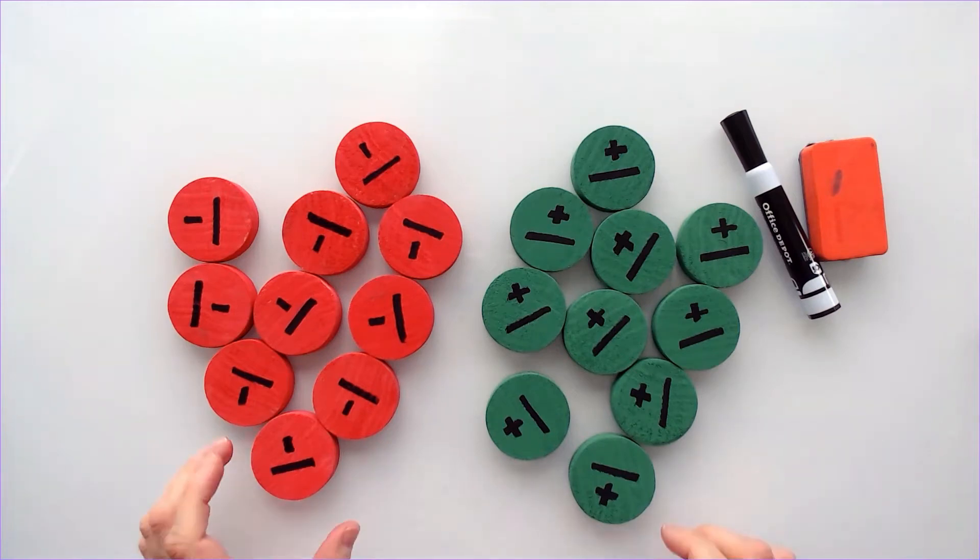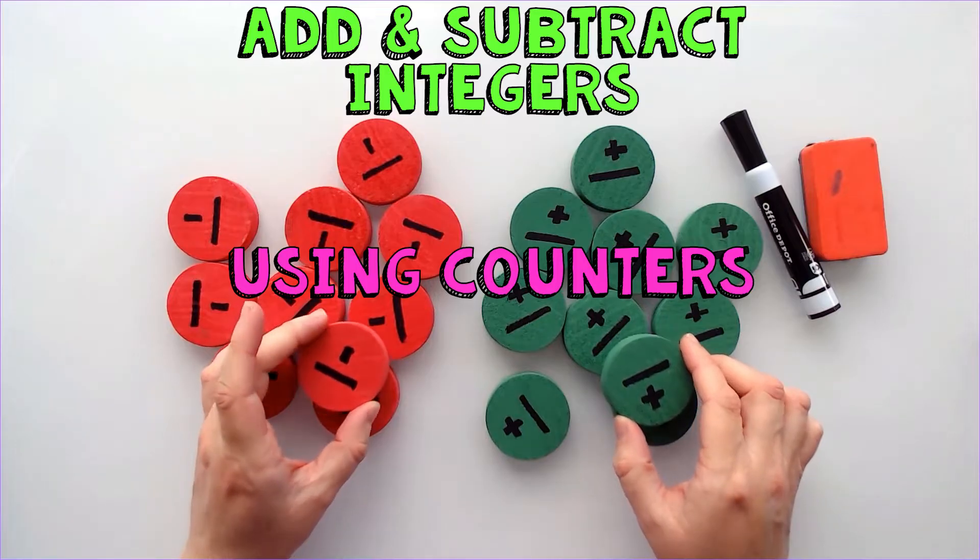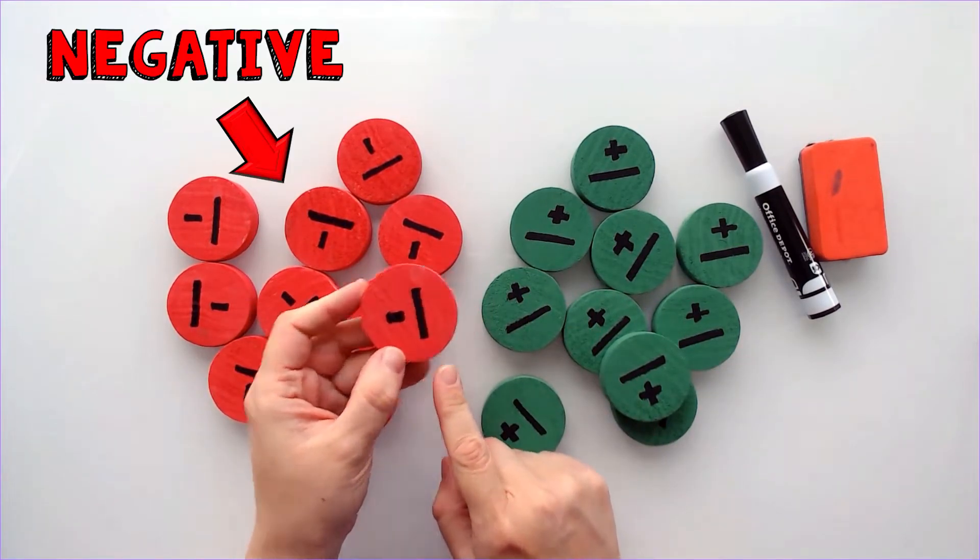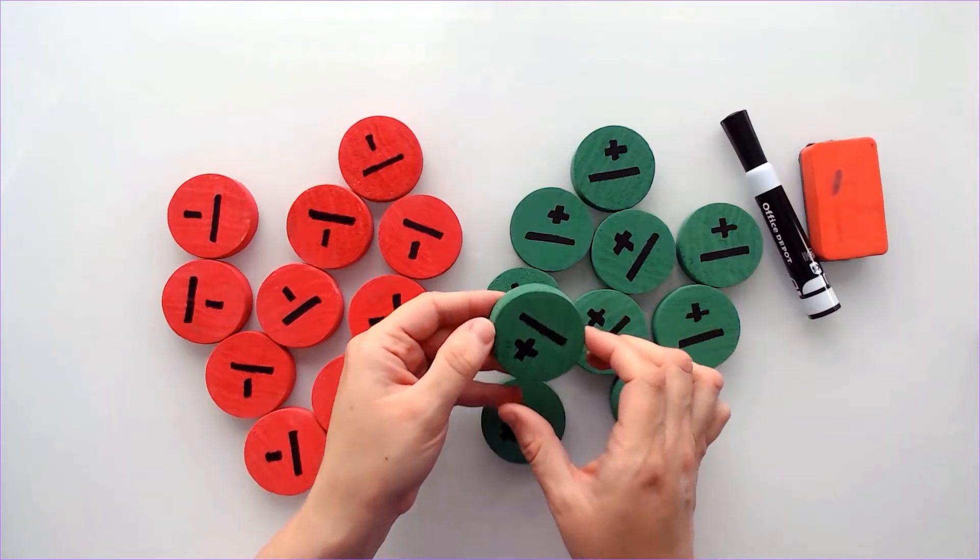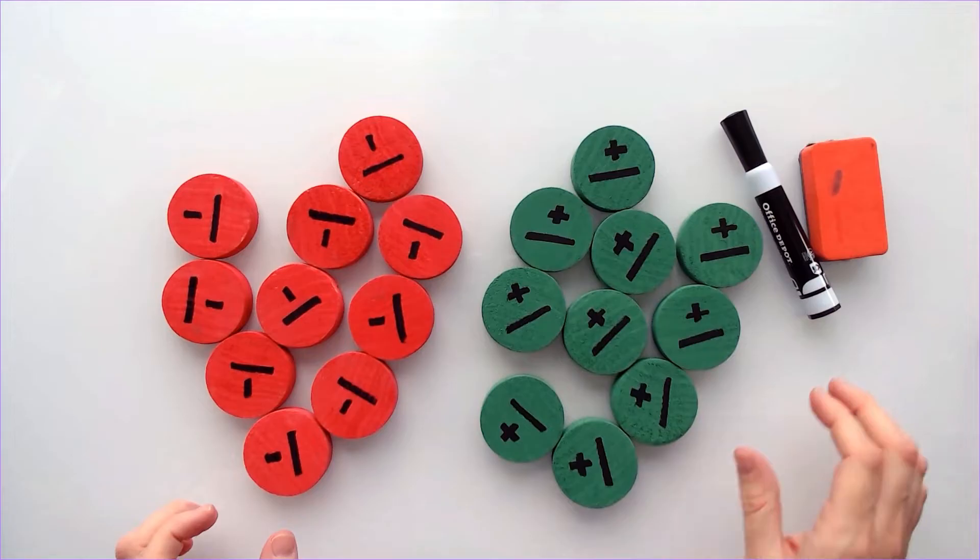In this video, we are going to be using counters to add and subtract integers. My red counter is negative 1, and my green counters are positive 1. Alright, so let's go ahead and get started.